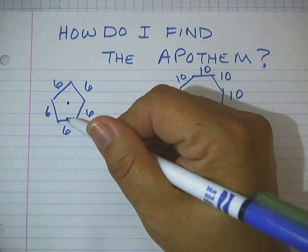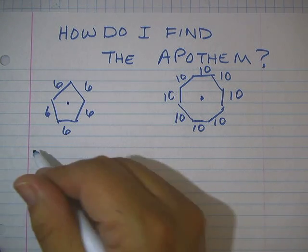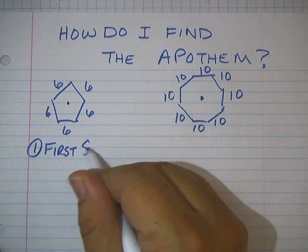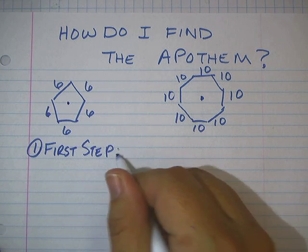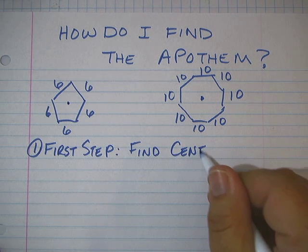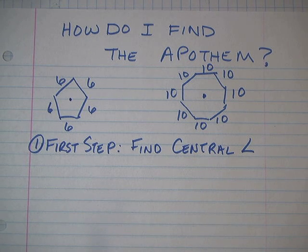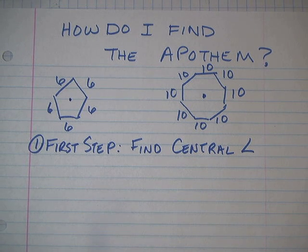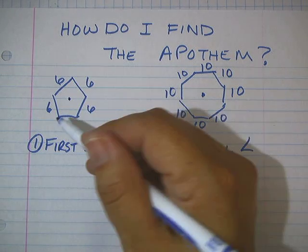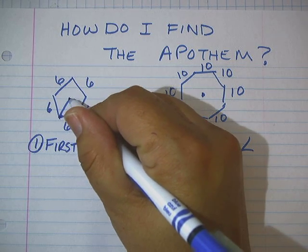So the first step I like to do is I like to find the central angle. First step, find central angle. Now what do I mean when I say find the central angle? Well you start in the center and you go well what kind of angle could I make with this polygon? Logical thing to do is to connect the little points on the end. And believe it or not, that is the central angle.